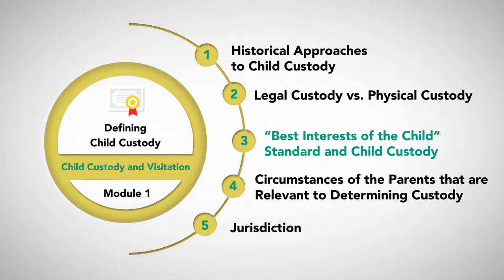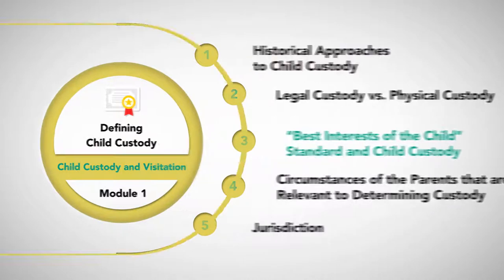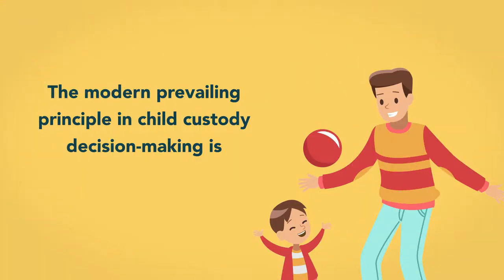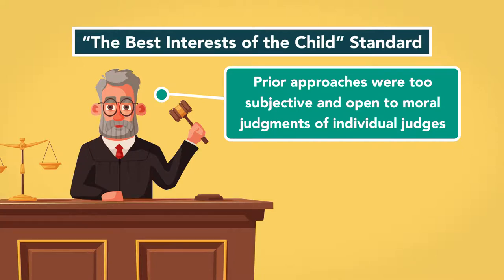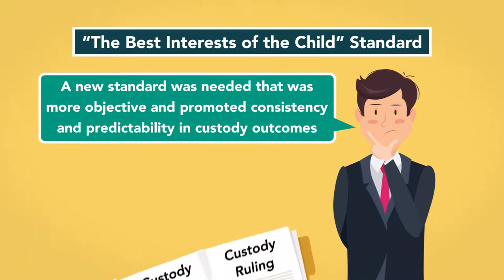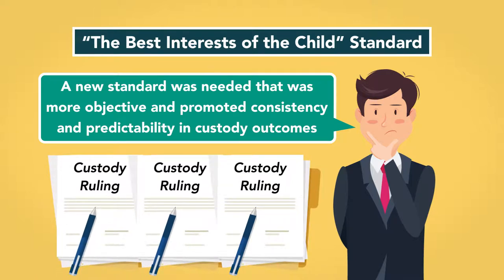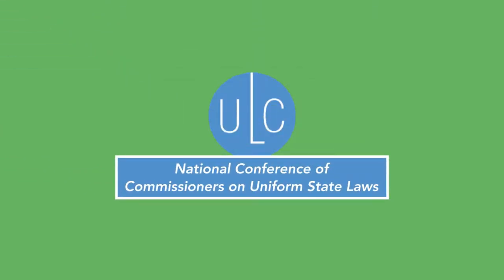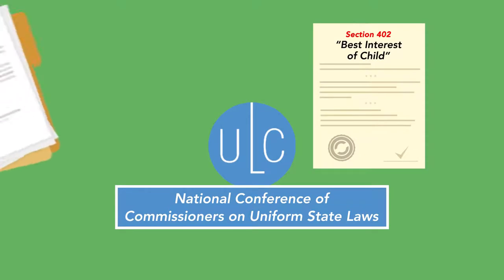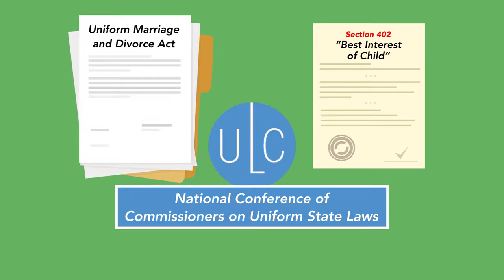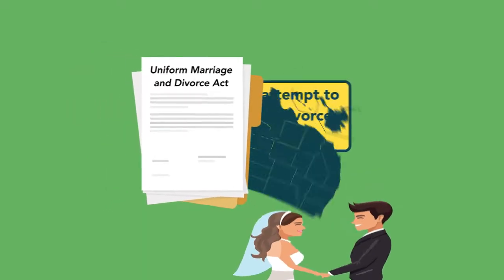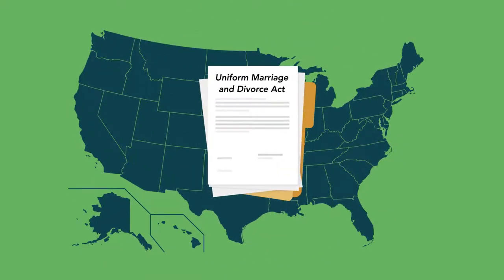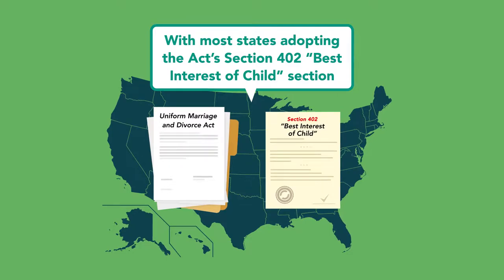The modern prevailing principle in child custody decision-making is the best interests of the child standard. Prior approaches were too subjective and open to moral judgments of individual judges, which led courts to seek a more objective standard promoting consistency and predictability. To remove subjectivity, the National Conference of Commissioners on Uniform State Laws drafted the Best Interest of the Child Section in the Uniform Marriage and Divorce Act, adopted in 1970, with most states adopting Section 402.